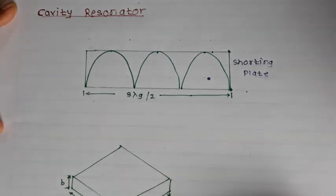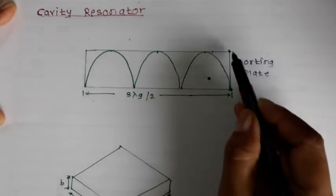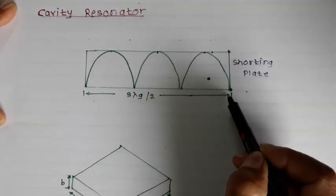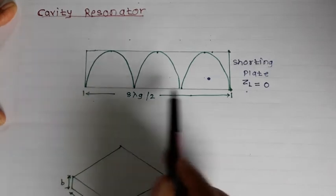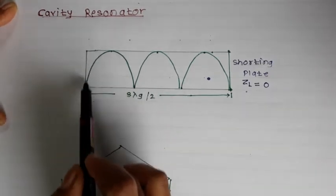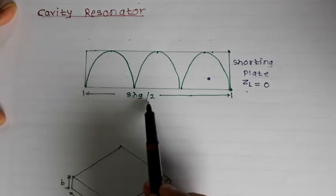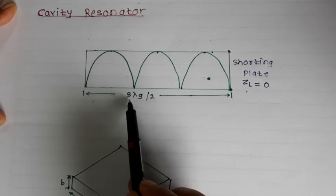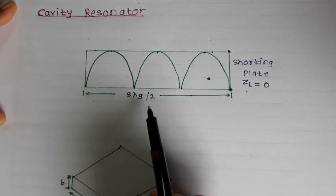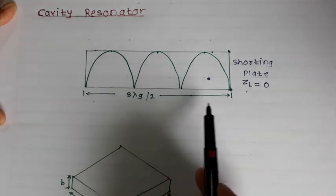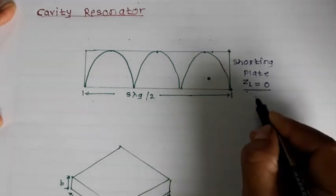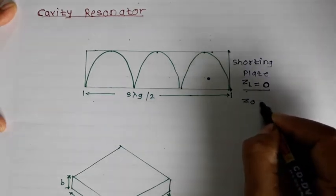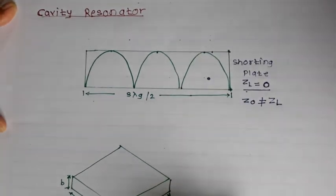In today's session we are going to discuss the cavity resonator. When one end of the waveguide is terminated in a shorting plate, meaning ZL is equal to zero, there will be reflections and hence standing waves will be formed. When another shorting plate is kept at a distance of 3 lambda_g by 2 or multiples of lambda_g by 2, the hollow space formed can support a signal which bounces back and forth between the two shorting plates. Since ZL is equal to zero, Z0 is not equal to ZL, and hence there will be reflections back and forth between the two shorting plates.